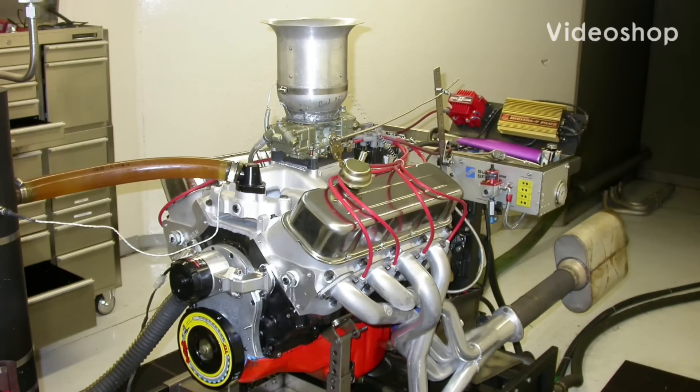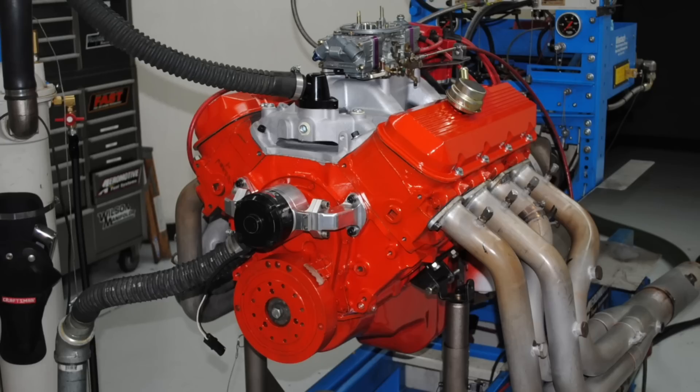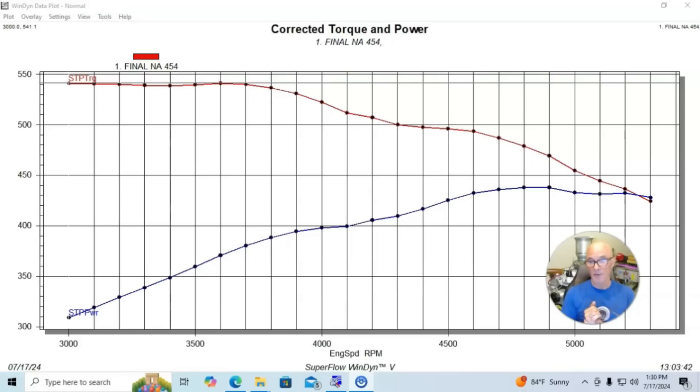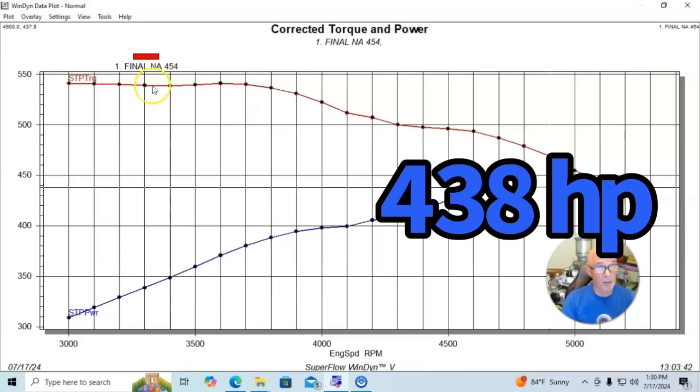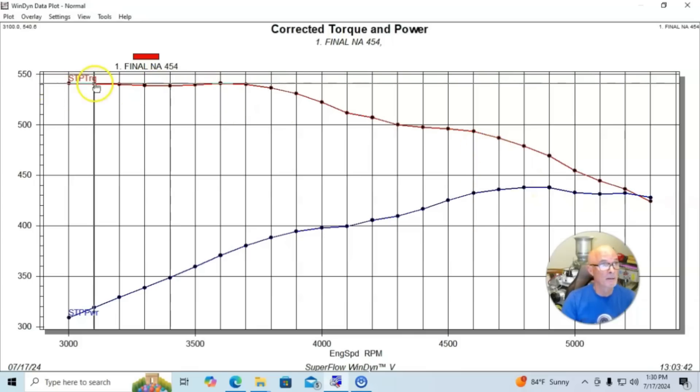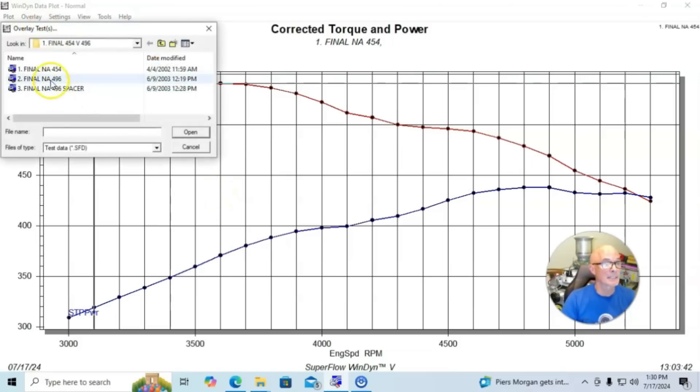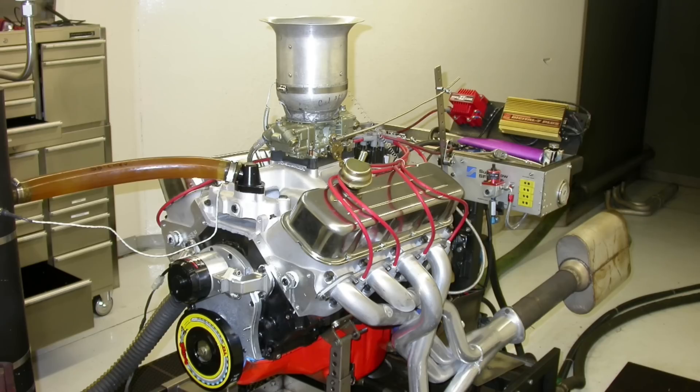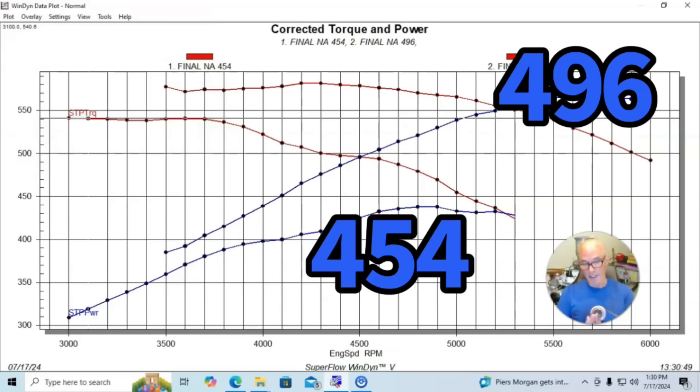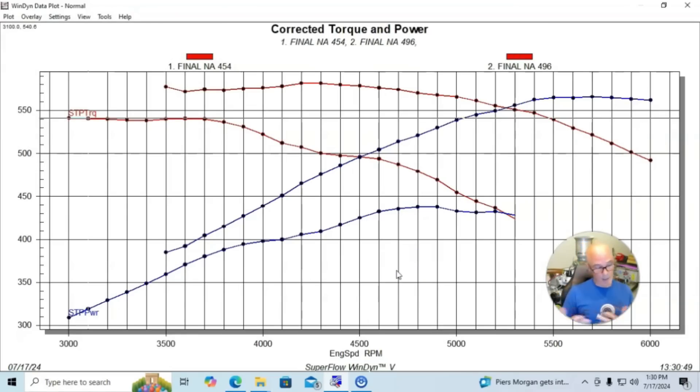Naturally, there was even more power to be had. Now let's take a look and see what happened when we went from this mild 454 to a 496. Our 454 made 438 horsepower and 540 foot-pounds. But here's what happened when we installed a 496. A 496 being bigger right off the bat is going to make more power and more torque, which it did.